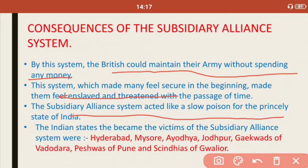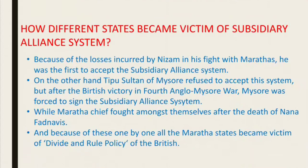Because of the Subsidiary Alliance System, several Indian states became victims of this system. These included Hyderabad, Mysore, Ayodhya, Jodhpur, the Gaikwads of Baroda, the Peshwas of Pune, and the Sindhias of Gwalior. Now let us move to the next topic — how different states became victims of the Subsidiary Alliance System.